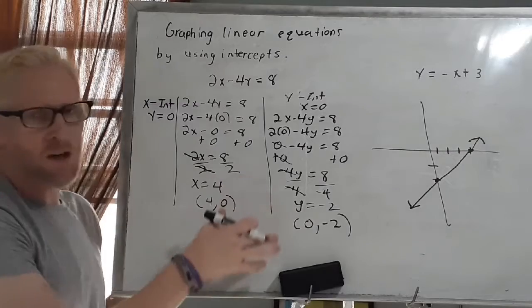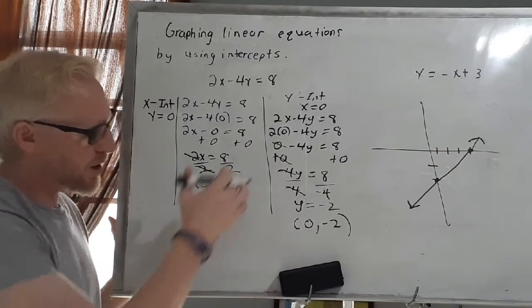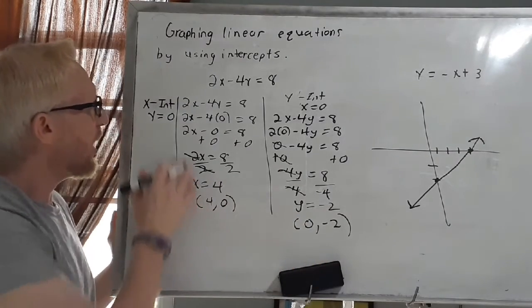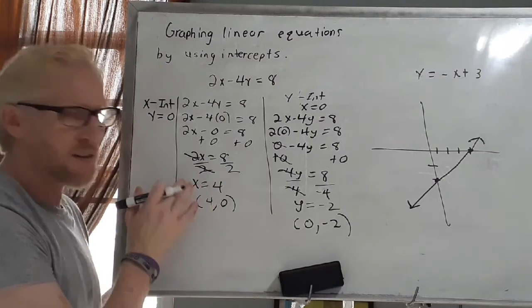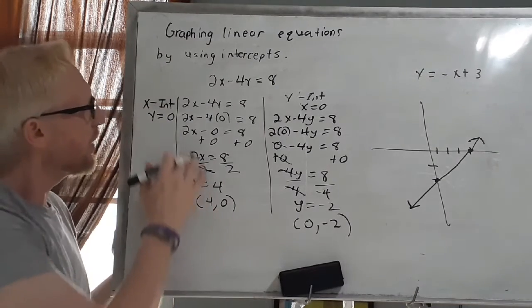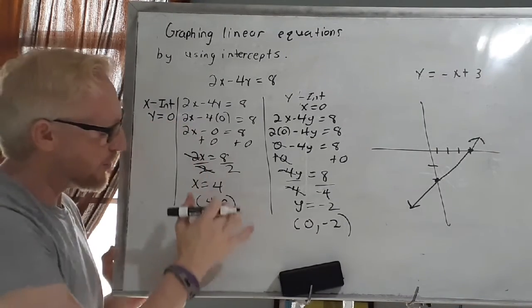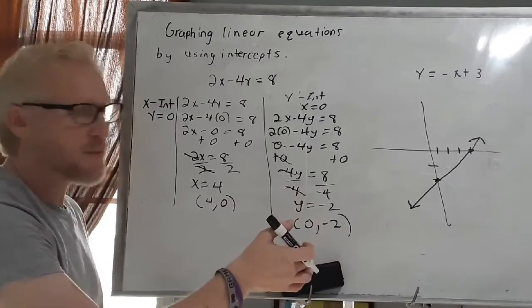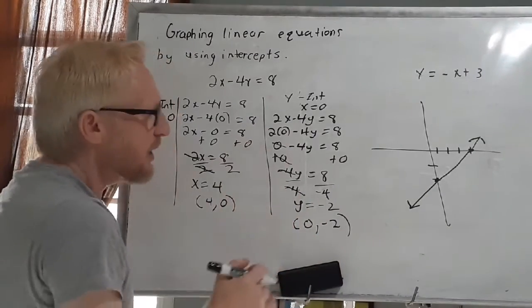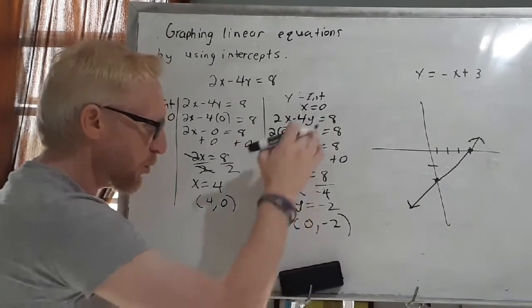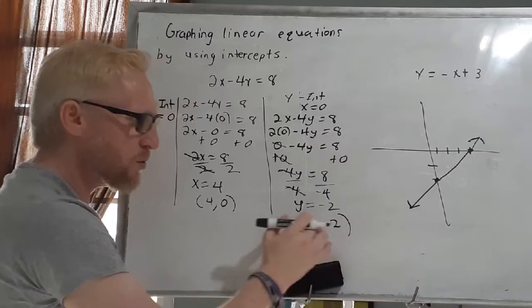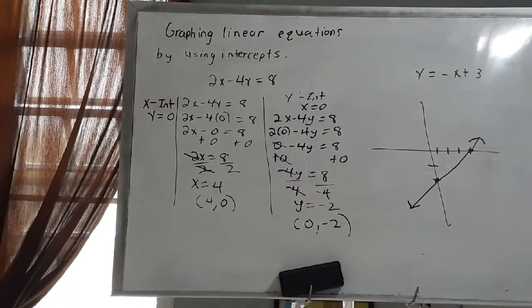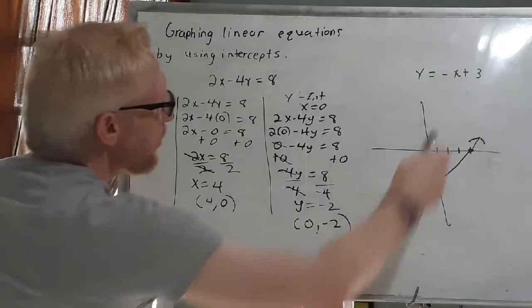Just like in our previous video, I found my x-intercept and my y-intercept. Remember: if you're looking for the x-intercept, y equals 0 — in this case x equals 4, giving ordered pair (4, 0). Likewise, when looking for the y-intercept, x equals 0 — and I solved for y equals negative 2, giving ordered pair (0, negative 2). Then I just trace the line.